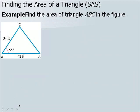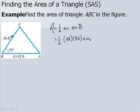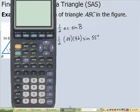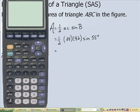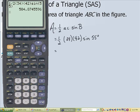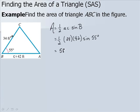In this example we find the area of a triangle given side-angle-side. We have side C, side A, and angle B, so the area formula is one half AC times sine of B. We have one half times 34 times 42 times the sine of 55 degrees. Plugging this into our calculator, we get a value of about 584.87 for our area.